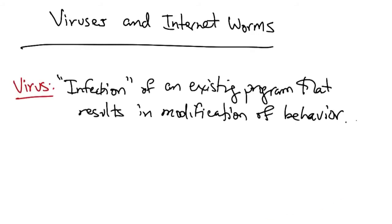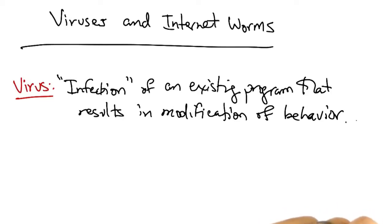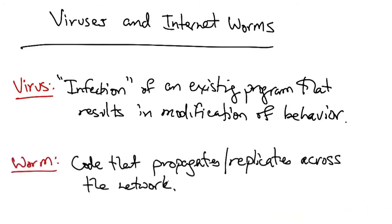A virus is effectively an infection of an existing program that results in the modification of the original program's behavior. A worm is code that propagates and replicates itself across the network, and is usually spread by exploiting flaws in existing programs or open services.